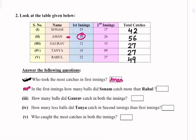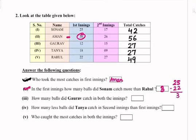In the first inning, how many balls did Sonam catch more than Rahul? Sonam's catches in the first inning are 25 and Rahul's are 22. So we will subtract 22 from 25 and the answer is 3. In the first inning, Sonam caught 3 balls more than Rahul.